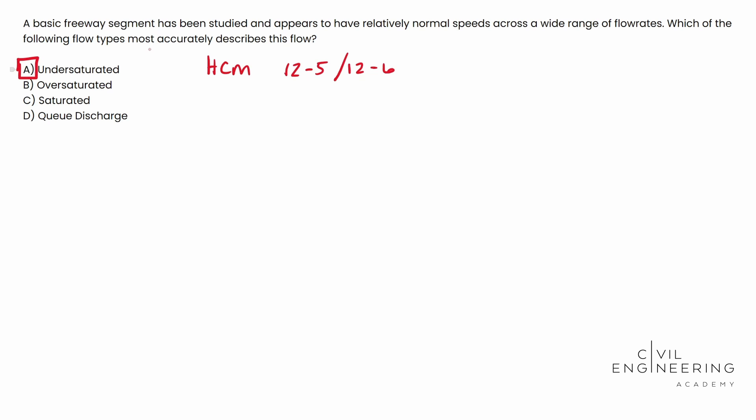Because remember, A, you're traveling freely. B, you're crammed in, you're slowed down. And then D, you're recovering your speed. You're accelerating back to your nominal or normal speeds. So I hope this video helped. Hope it cleared some things up. We'll catch you next time.